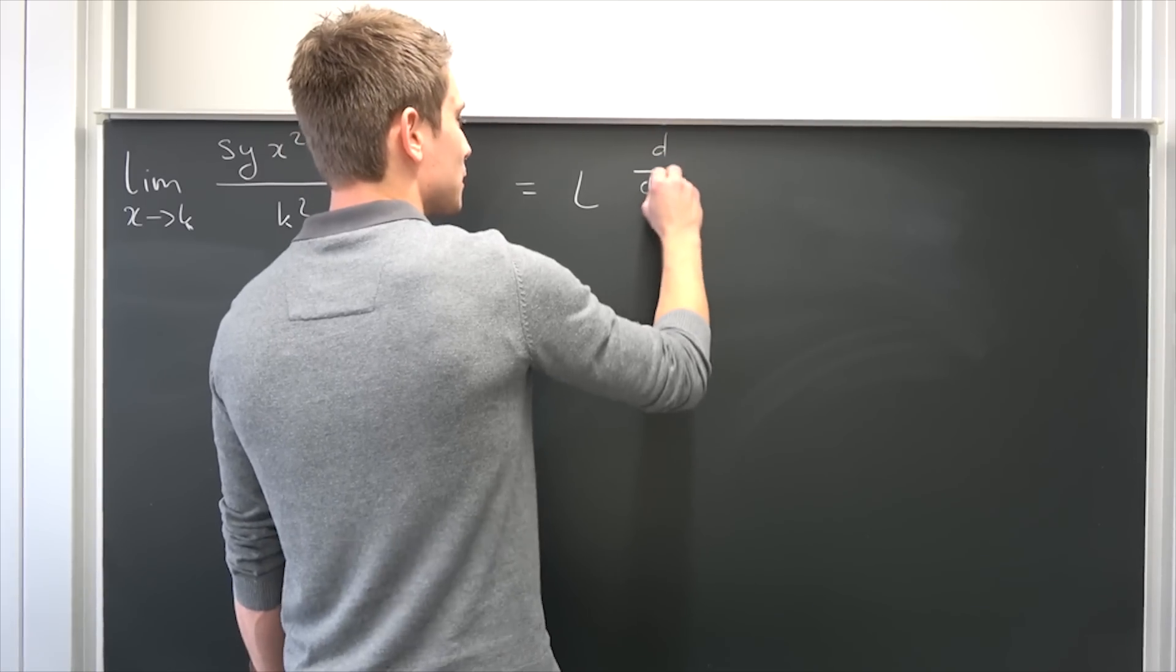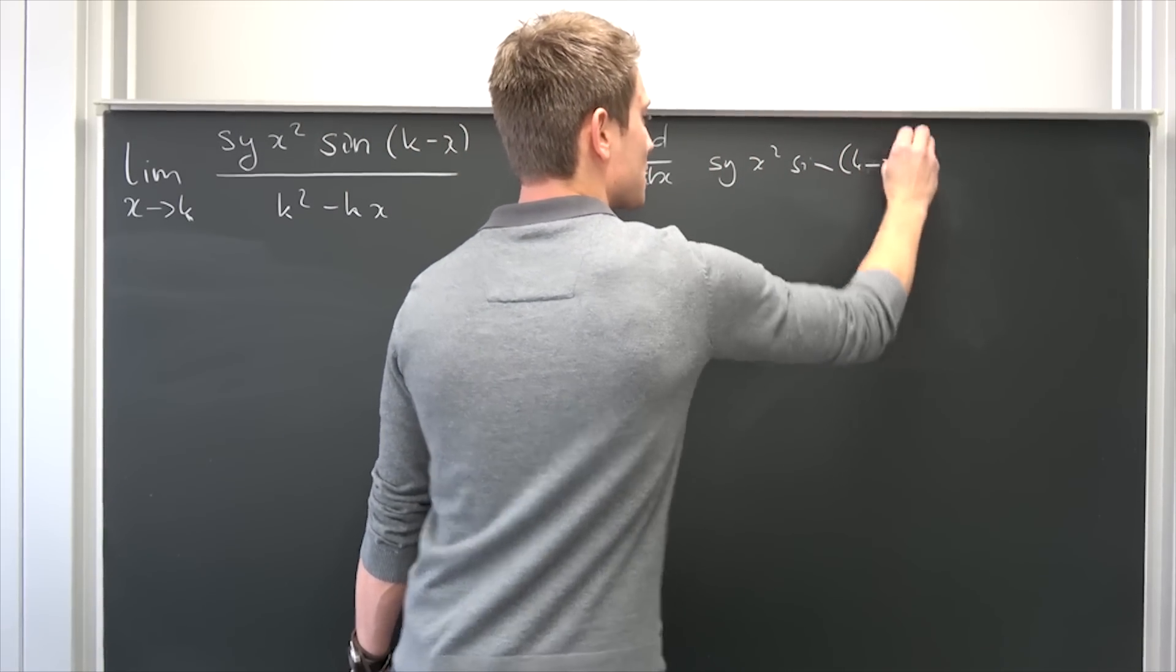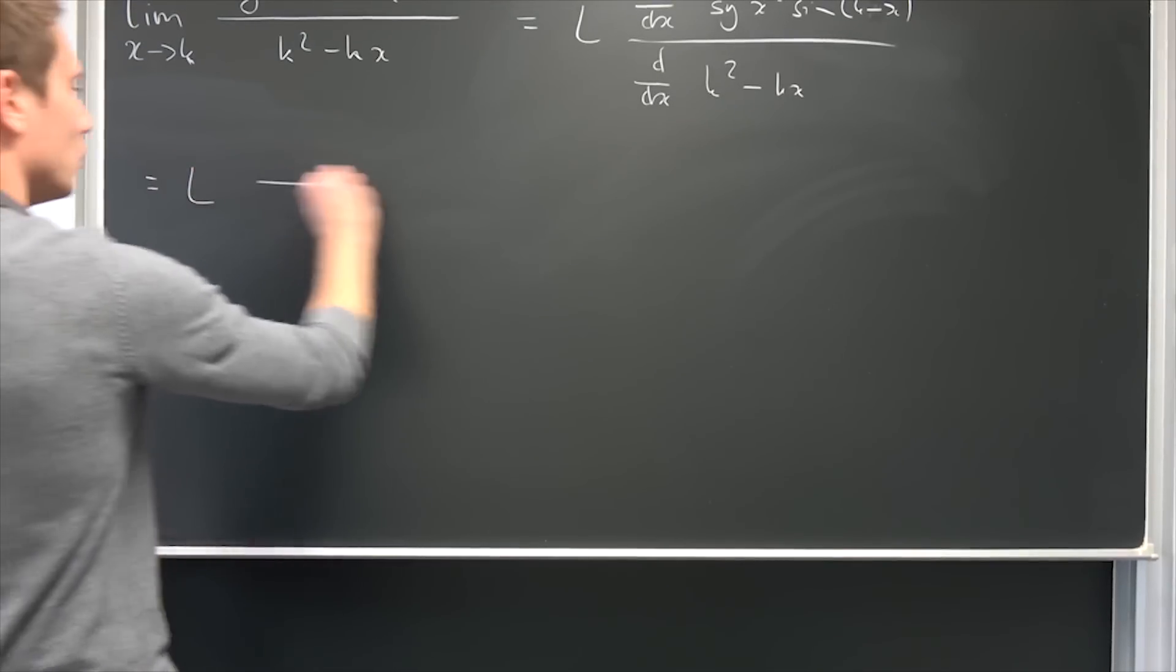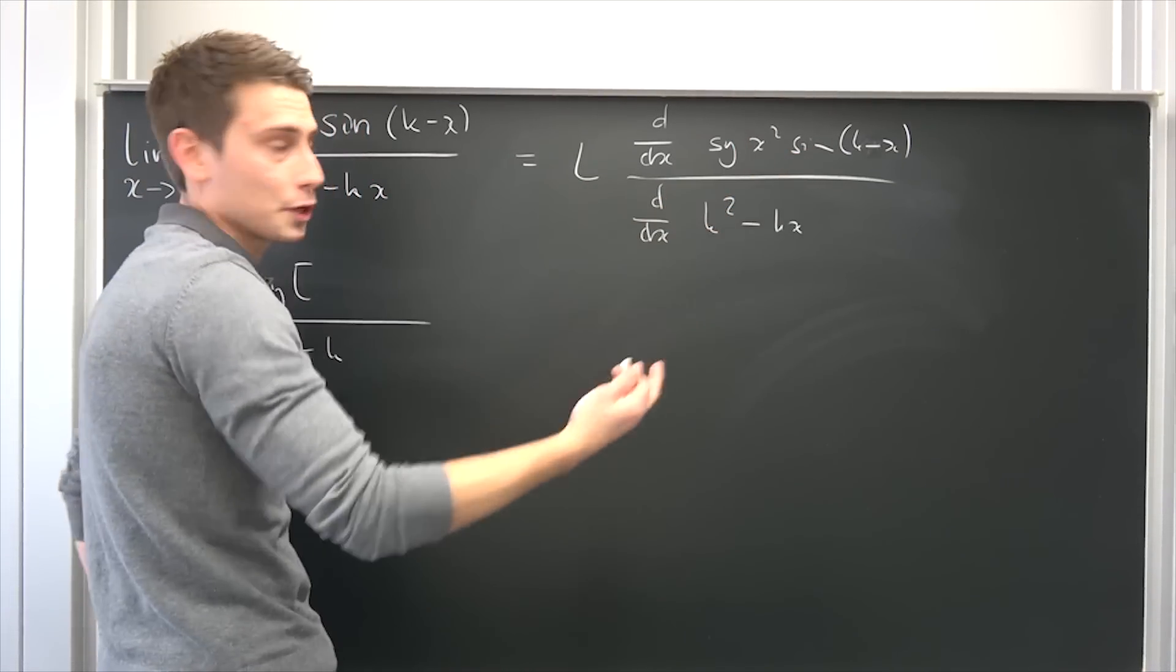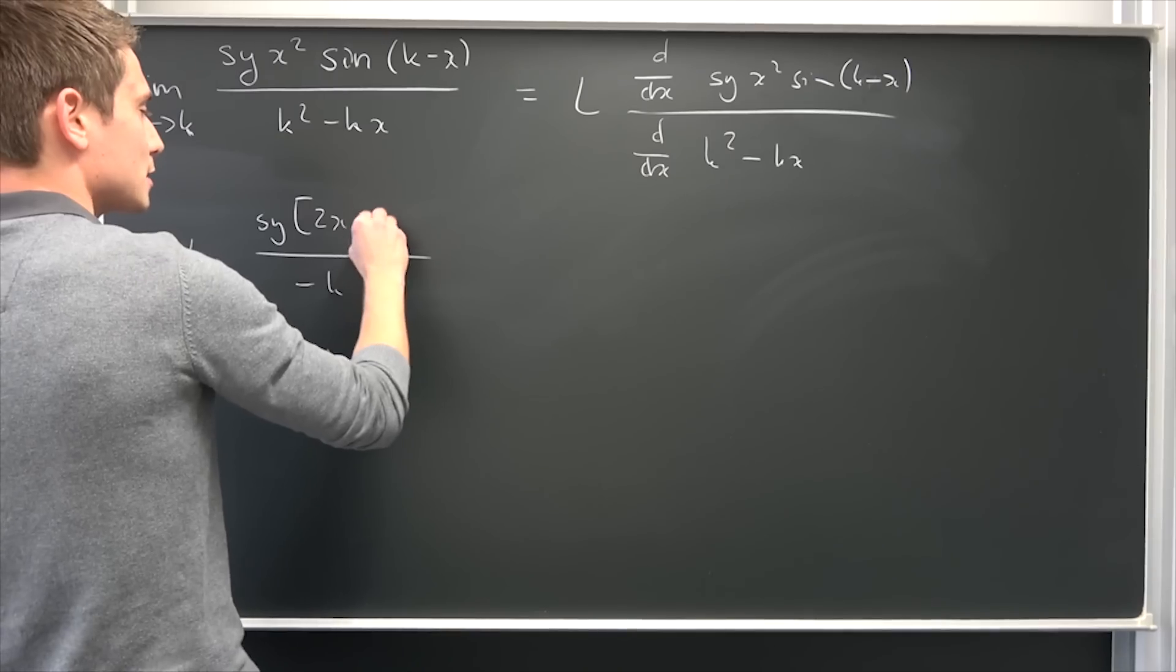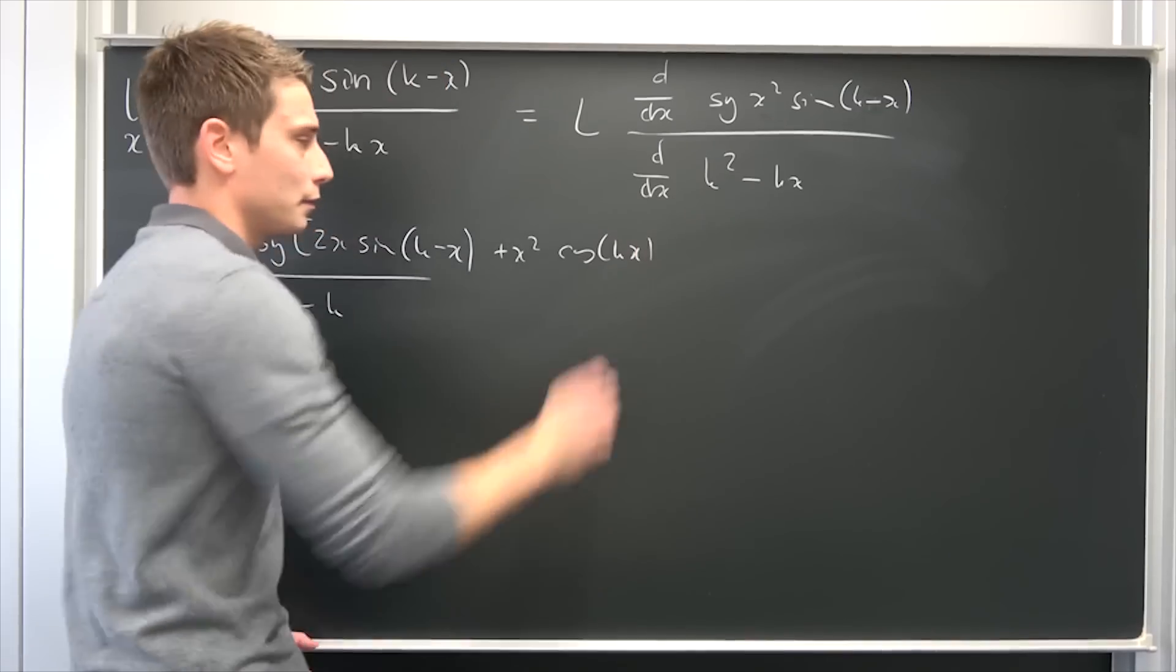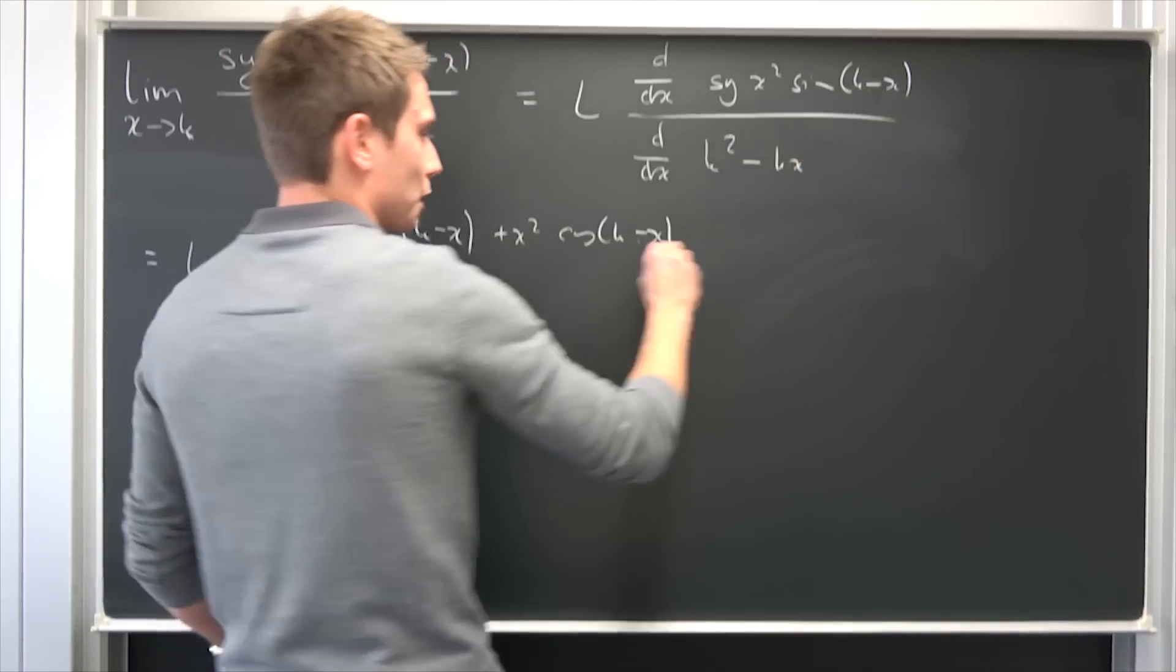So why not take the limit L of d/dx of the numerator? s and y are just constants, so we have x squared sine of k minus x. We are going to take the derivative of the denominator k squared minus k times x. Well, the denominator is quite easy to evaluate, it's going to be negative k down here. Up here s and y are just constants, bring them to the outside, and now we have to use the product rule. We have 2 times x times the sine of k minus x, and then we keep our x squared. We differentiate this right here, resulting in the cosine of k minus x, and the chain rule derivative is negative 1, so times negative 1.